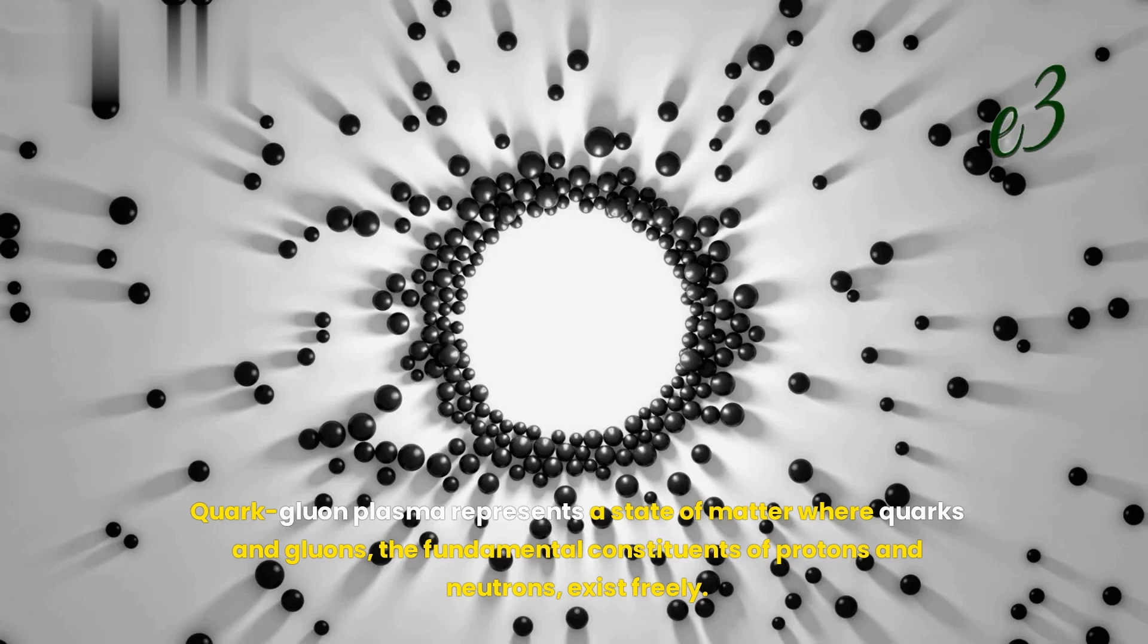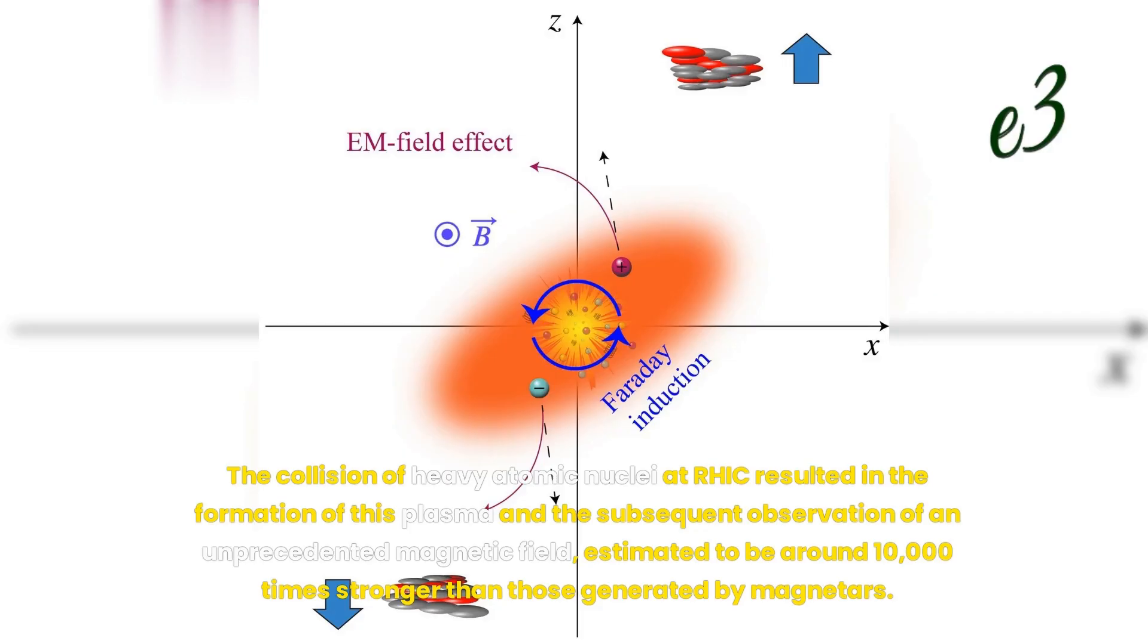Quark-gluon plasma represents a state of matter where quarks and gluons, the fundamental constituents of protons and neutrons, exist freely. The collision of heavy atomic nuclei at RHIC resulted in the formation of this plasma and the subsequent observation of an unprecedented magnetic field, estimated to be around 10,000 times stronger than those generated by magnetars.